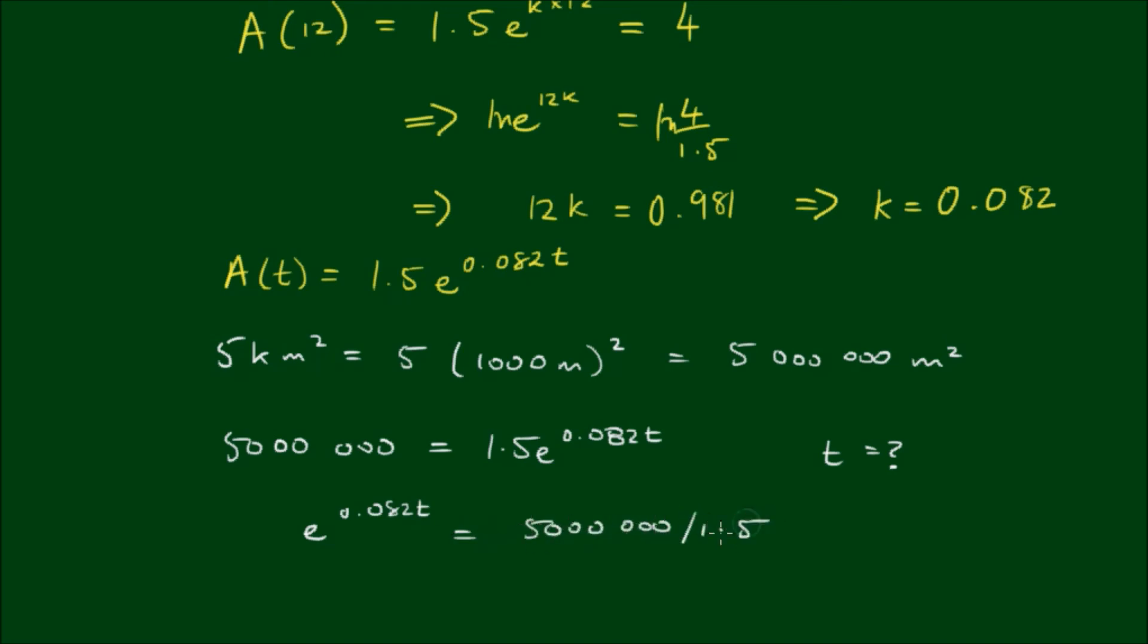And if we take the natural log of both sides we get 0.082 T equals approximately 15.02, and then solving for T we get 15.02 divided by 0.082 which is approximately equal to 183 days which is about 6 months.